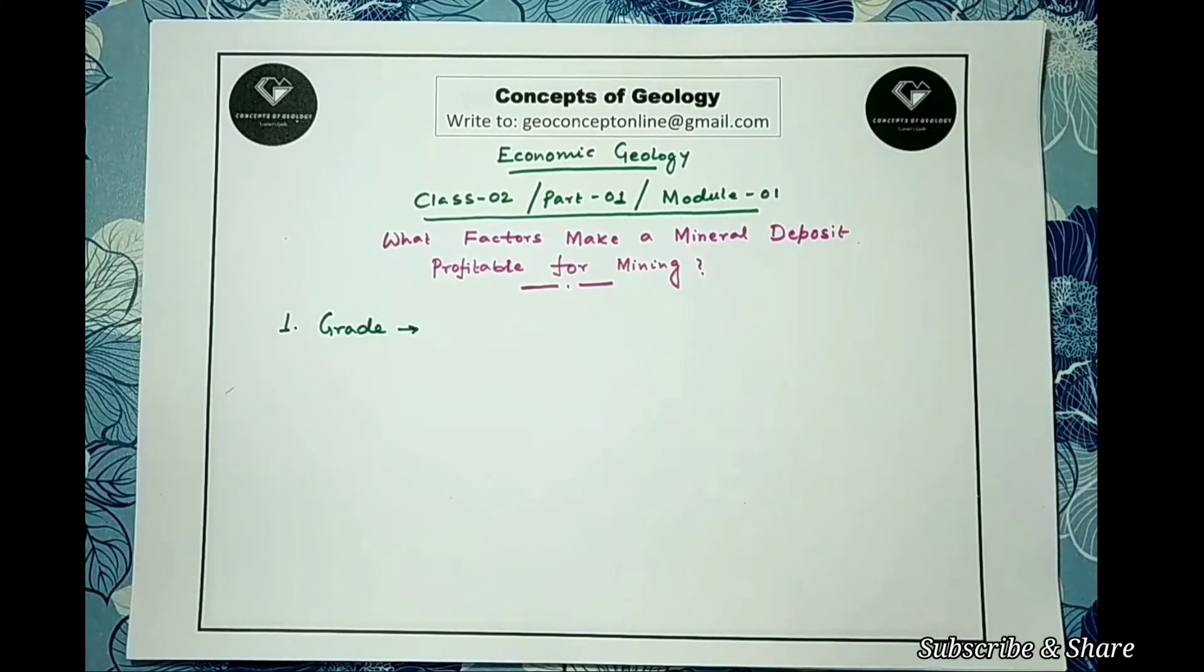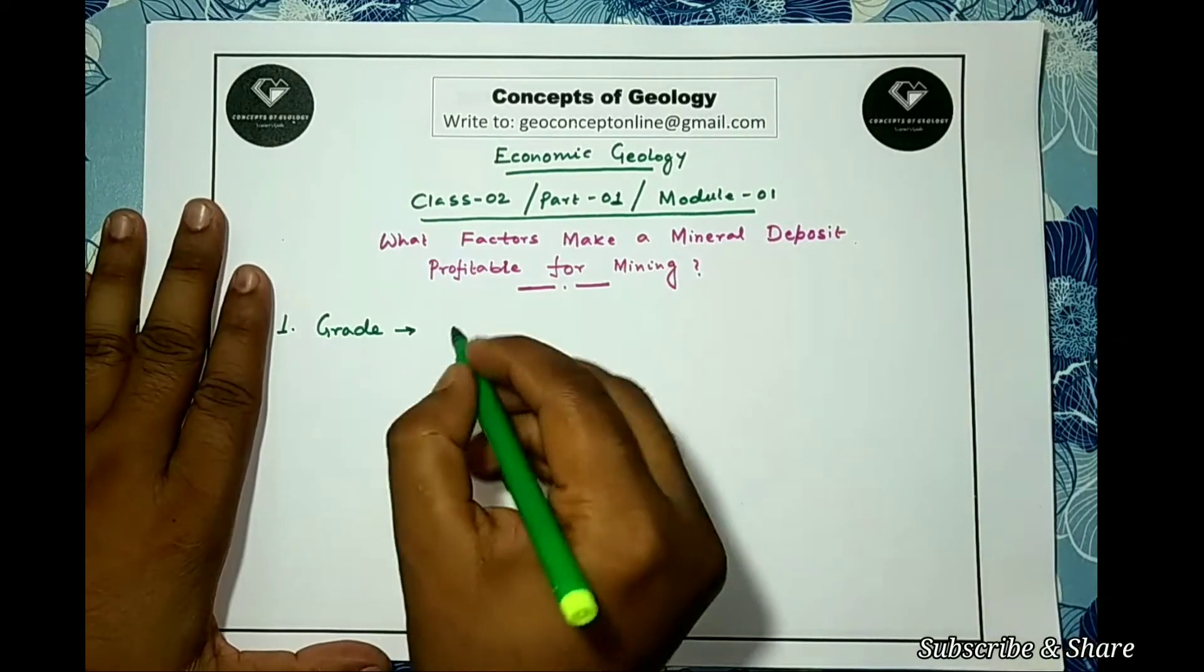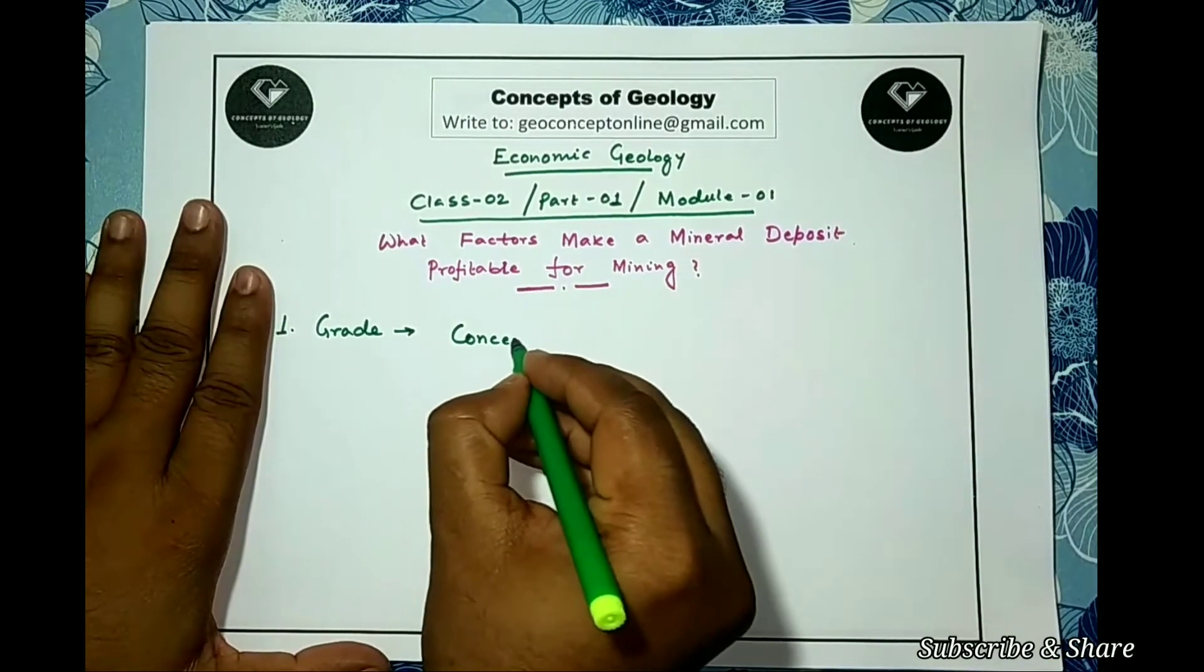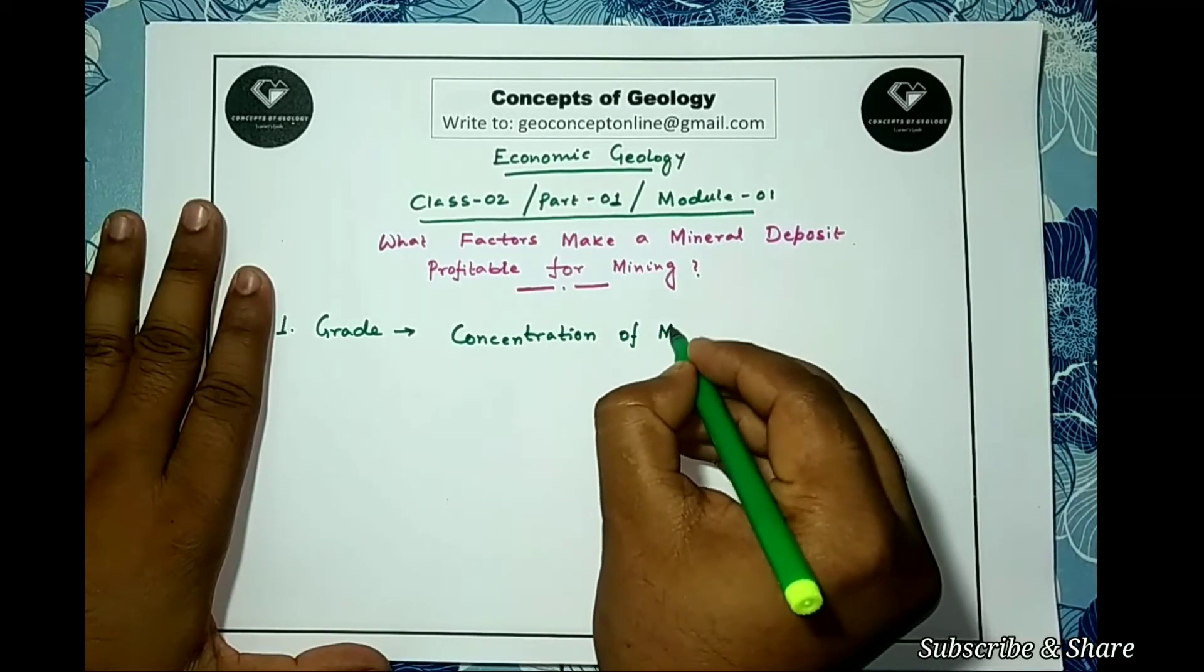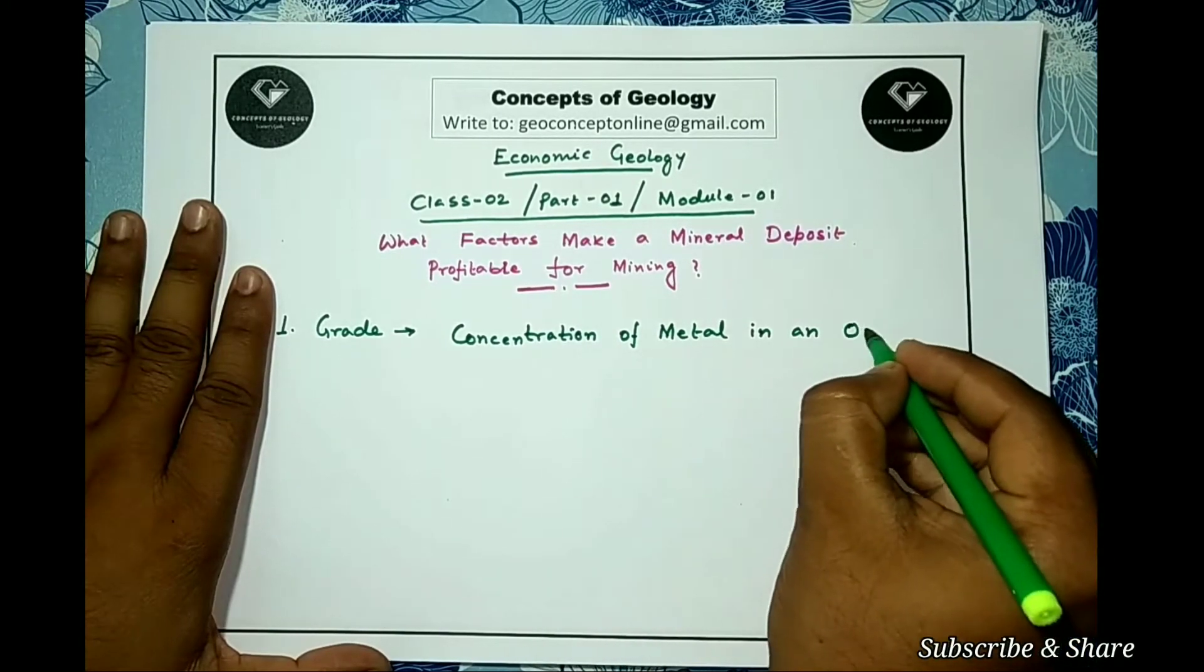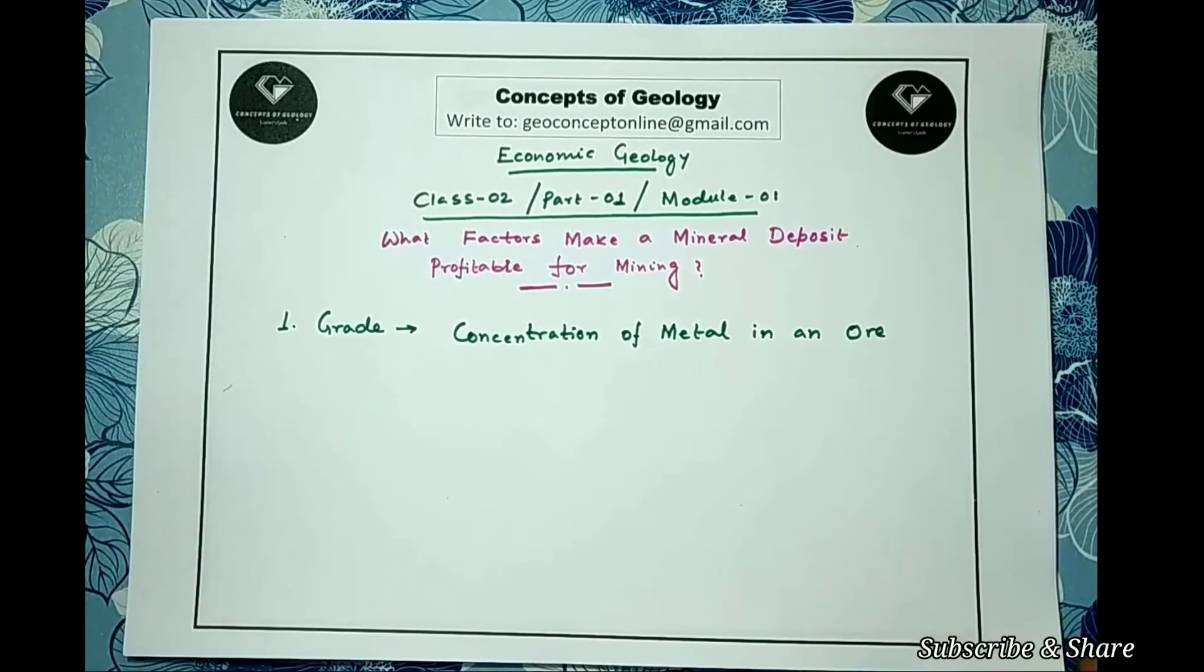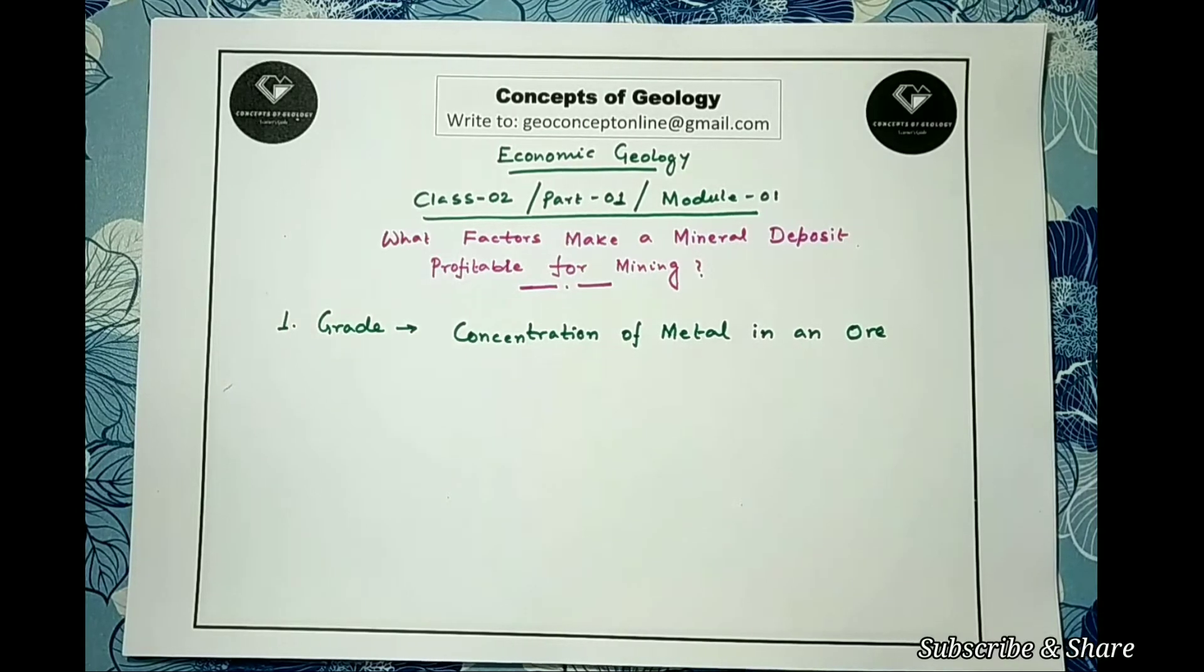What does grade mean? The grade is the concentration of metal in an ore. It is expressed as percentage or in terms of ppm, parts per million. The process of determining the concentration is called assaying.